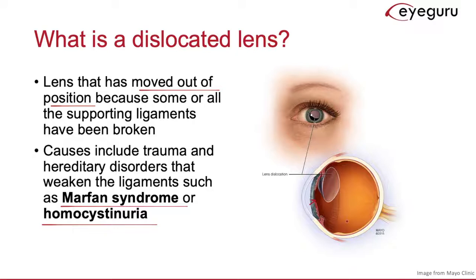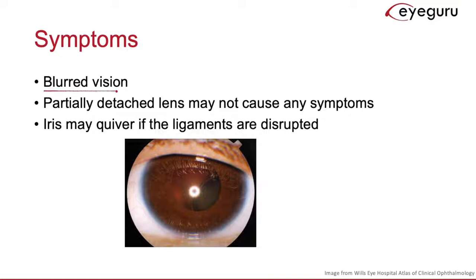The most common symptom of a dislocated lens is blurred vision, typically due to a refractive problem. In certain milder cases in which the lens is only partially detached, the patient might not report any visual symptoms at all. Some patients might experience an iris that quivers due to disruption of these ligaments.